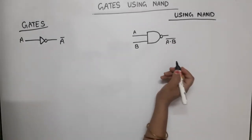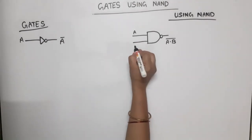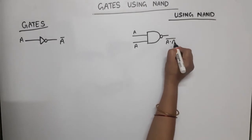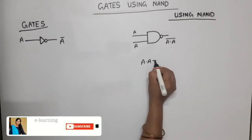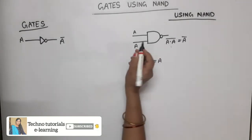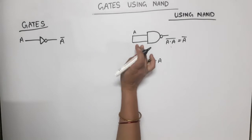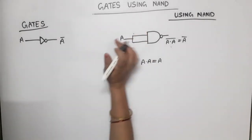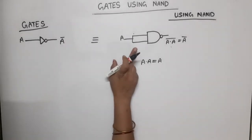Now if we replace input B by A, then we get A dot A bar. According to Boolean algebra, A dot A is equal to A, so finally we get A bar. So we short both inputs and apply single input A. This is NOT gate using NAND gate only.